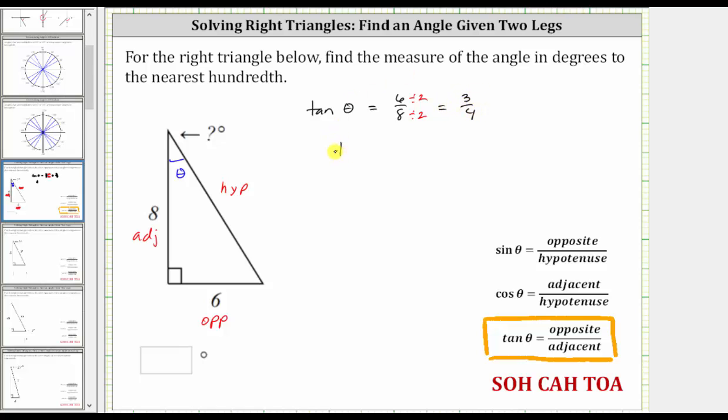But our goal is to solve this equation for theta, and therefore we need to undo the tangent function by taking the inverse tangent or arc tangent of both sides of the equation. Let's take the inverse tangent of both sides. On the left, inverse tangent of tangent theta simplifies perfectly to theta, because inverse tangent and tangent undo each other. This gives us theta equals inverse tangent of three-fourths.